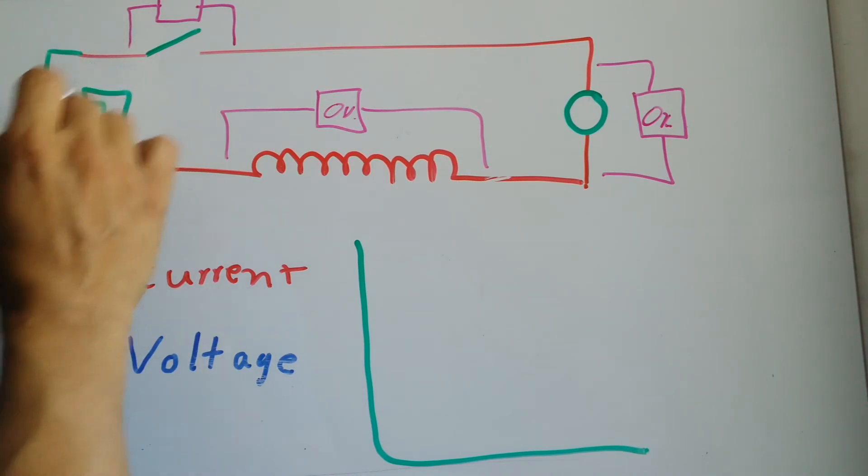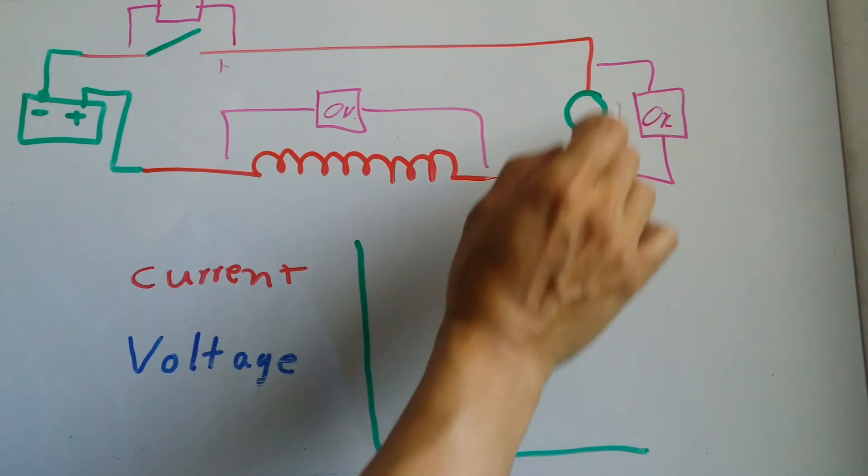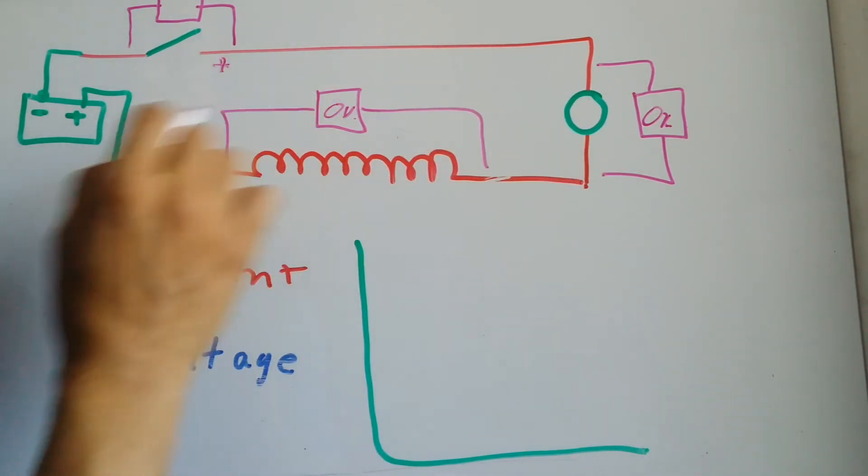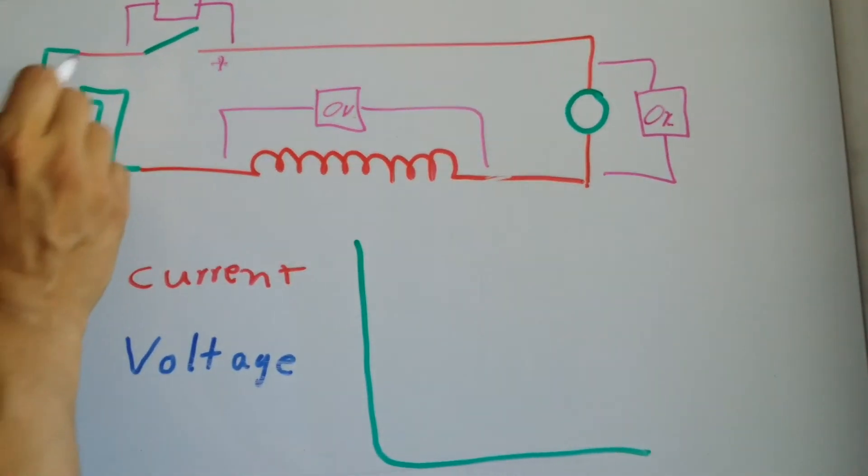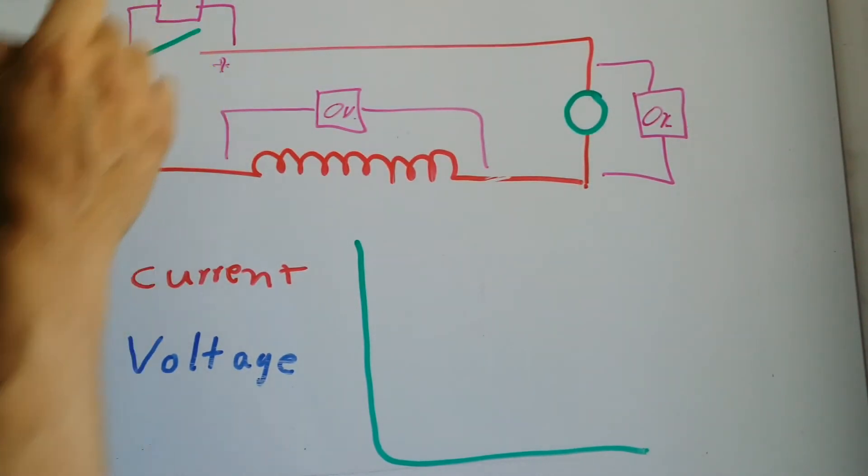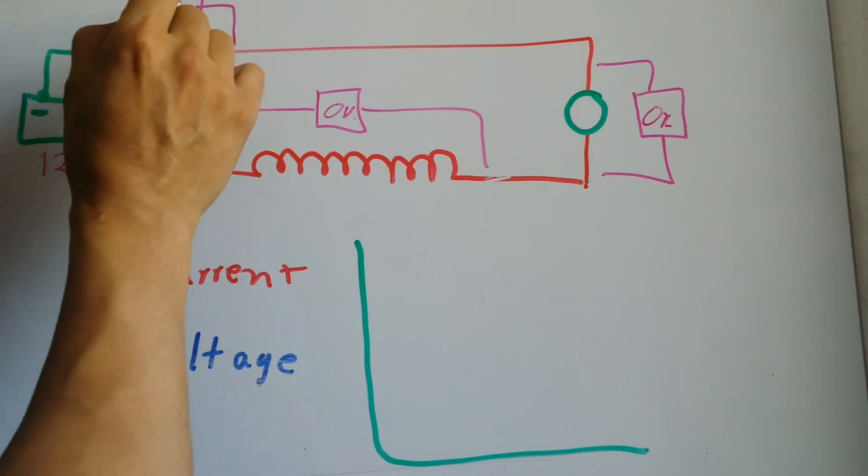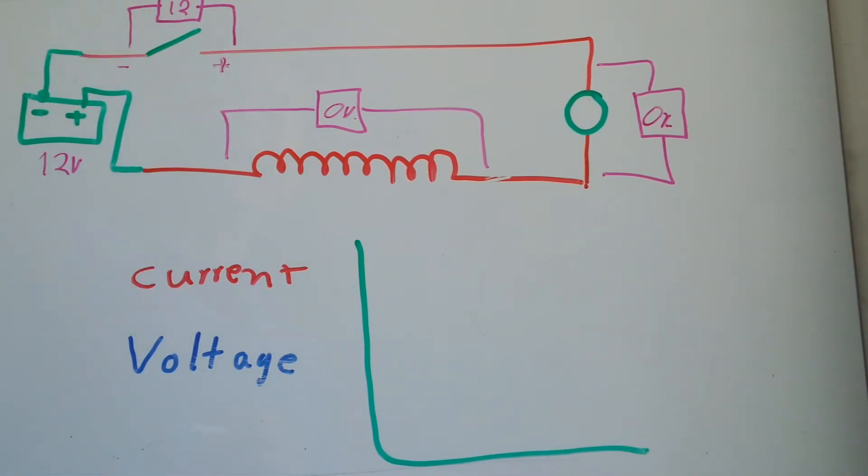However, down here it will feel like there is a positive because all of this is acting as a short, so we're feeling this potential. At this point we got negative potential, so we have the whole battery power. If this is a 12 volt battery, this will be 12 volts what we will read in the multimeter.